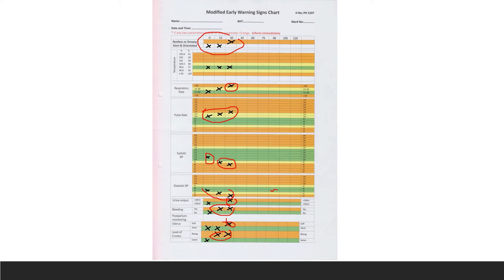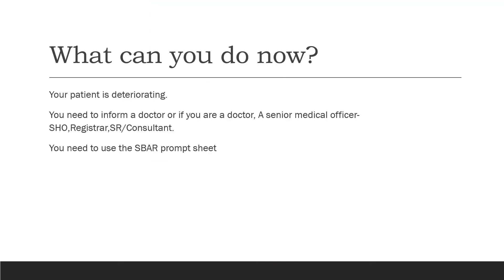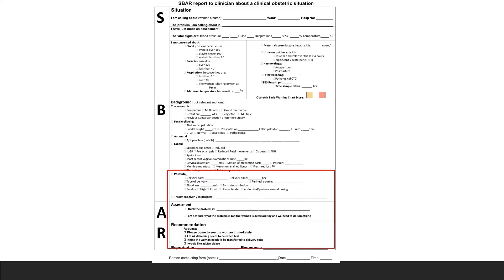As advised in the early warning score system, when you have a single orange or two yellows, you need to inform your seniors or colleagues about the patient. We need to transmit information about this patient. When you are conversant and well rehearsed you won't need prompt sheets, but initially you should use SBAR prompt sheets to structure your communication to the doctor or senior house officer or registrar.